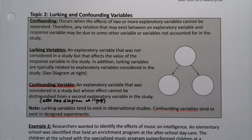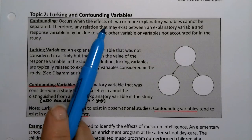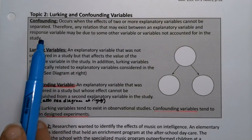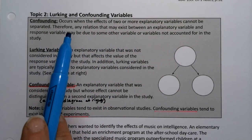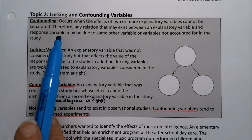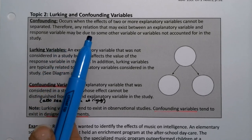When we're dealing with a relationship between an explanatory variable and a response variable, it's very important to keep confounding in mind, also known as lurking. Confounding is when the effects of two or more explanatory variables cannot be separated. Therefore, any relation that may exist between an explanatory variable and a response variable may be due to some other variable that's not accounted for in the study.